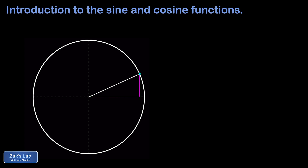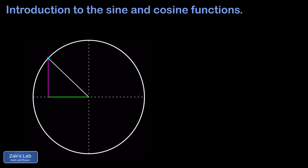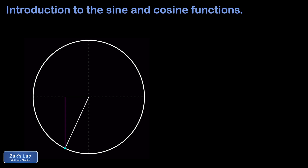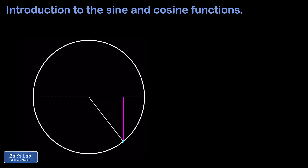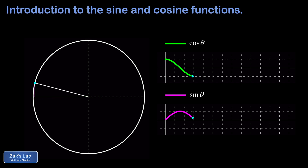As theta increases from zero, the sine starts at zero and grows, while the cosine starts at one and shrinks. At π/2, sine reaches its maximum of one and cosine is zero. Then cosine becomes negative but grows larger in magnitude, while sine begins to shrink. The cosine reaches its minimum of −1 while sine reaches zero and crosses into negative values. Then sine reaches its minimum of −1 while cosine returns to zero, and finally we return to the initial position and the behavior repeats.